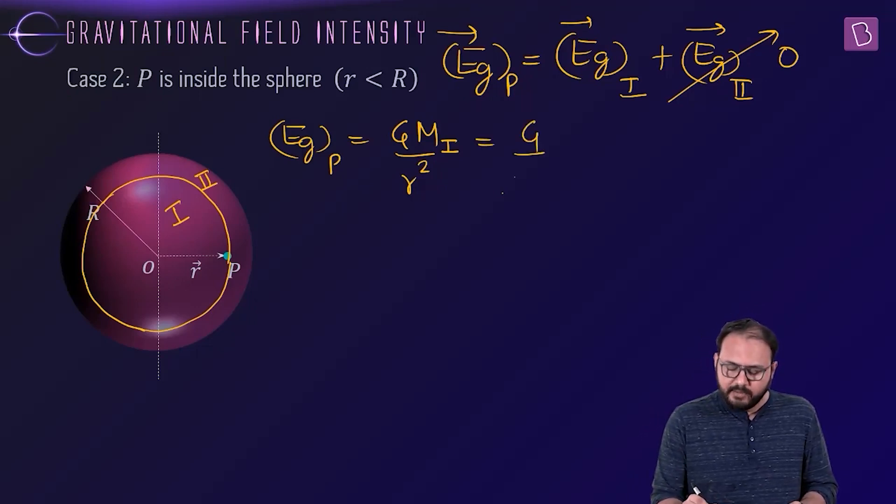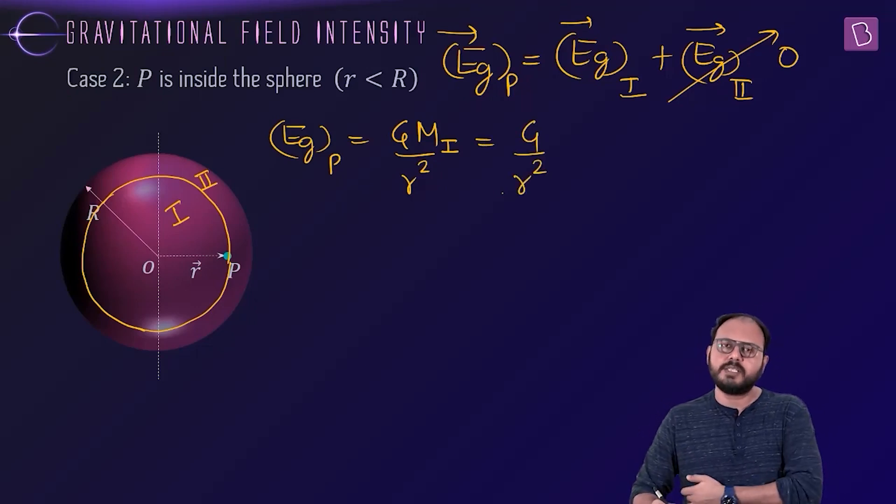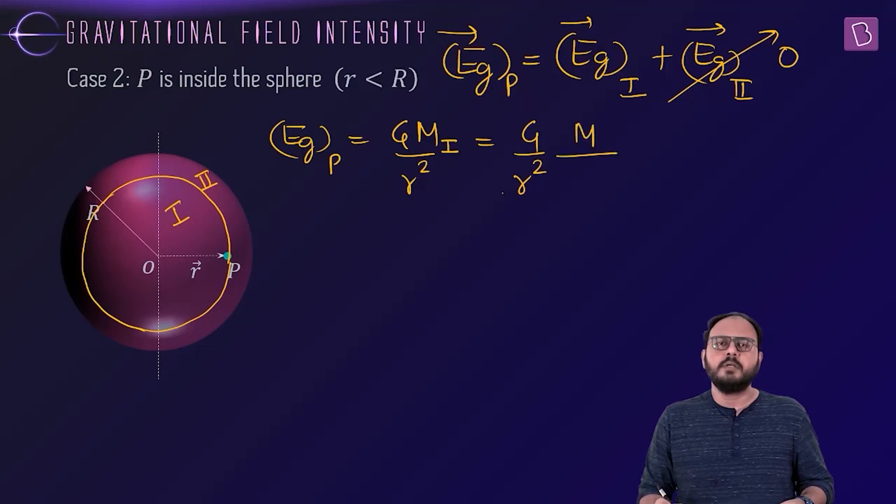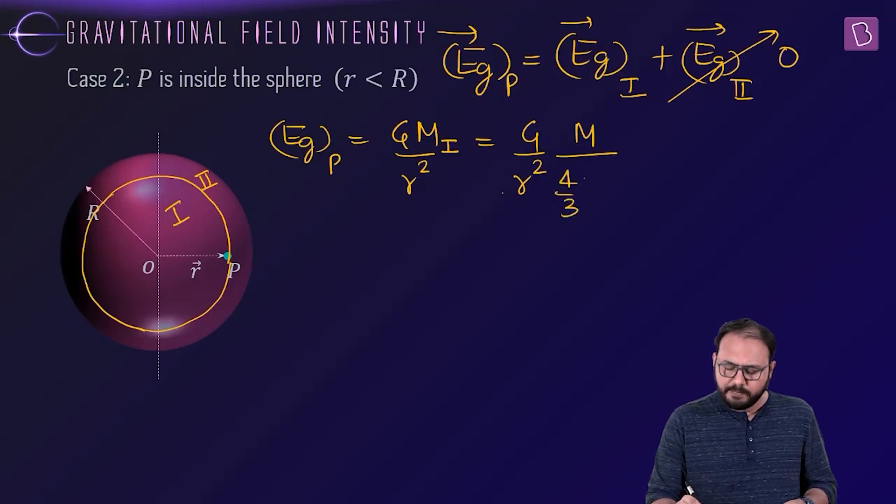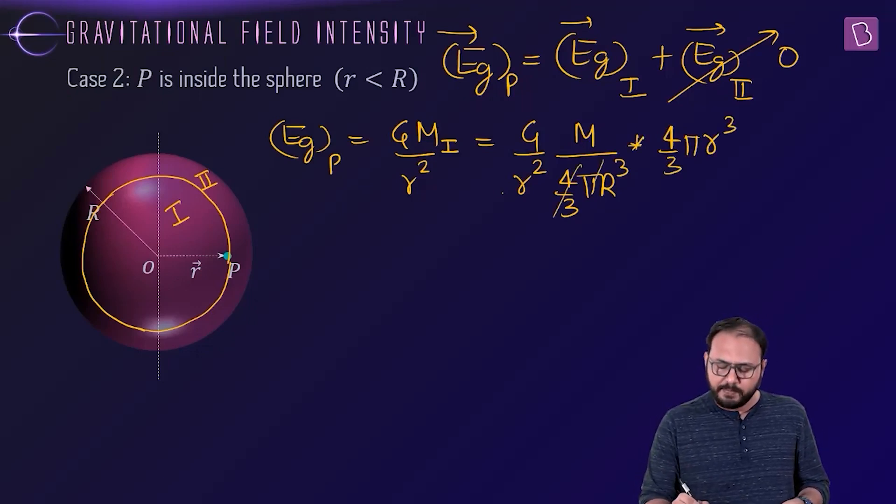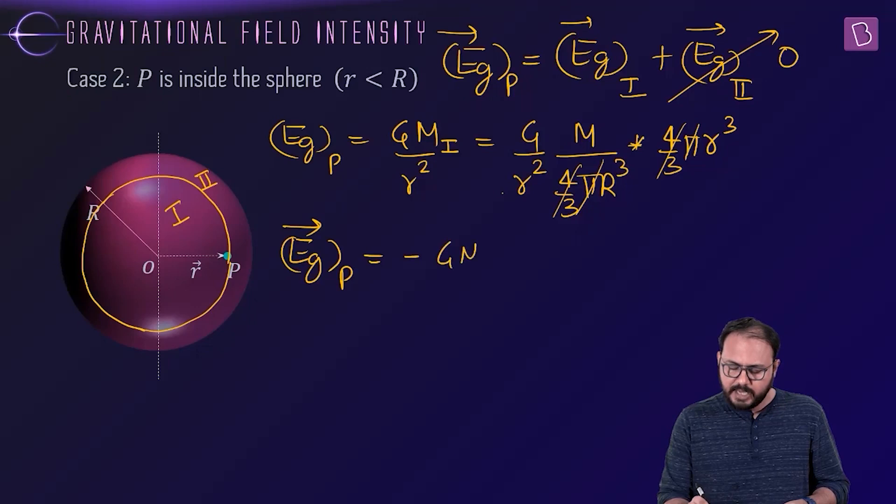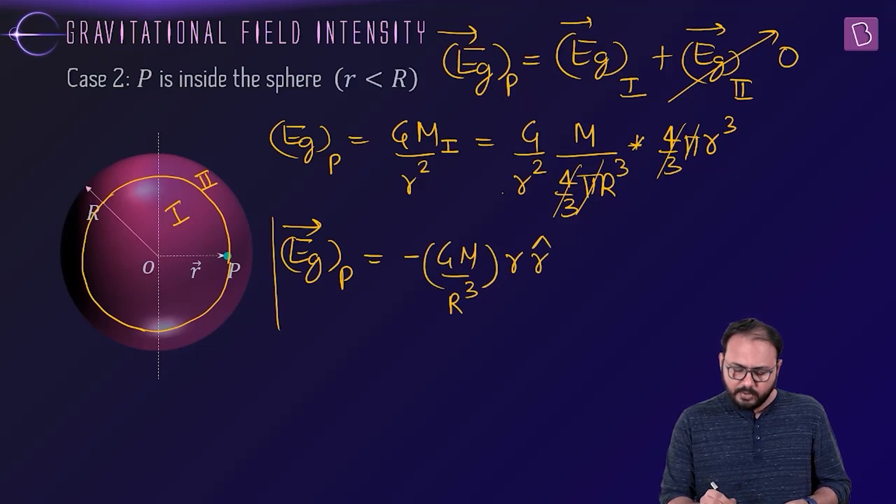How do I solve that? Unitary method. Total sphere's mass is M. Total volume of the sphere is four by three pi capital R cubed. Mass of volume of the sphere part one is four by three pi small r cubed. Four by three pi cancels and r square cancels one r. So Eg at point P vector is minus g M by R cube times r, r cap.